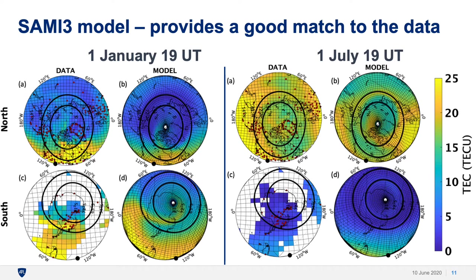Looking at the January cases in both hemispheres, the SAMe-3 model does a very good job of predicting the tongues of ionization — showing the same location and approximately the same magnitude. It fills in the gaps in the Southern Hemisphere, showing how the tongue of ionization can spiral in from the late evening across Antarctica towards the magnetic pole. In July, the polar caps are both a lot more uniform, although there is a tongue of ionization coming in from the late evening in the north. Now let's look at some movies to get an idea of the dynamics.